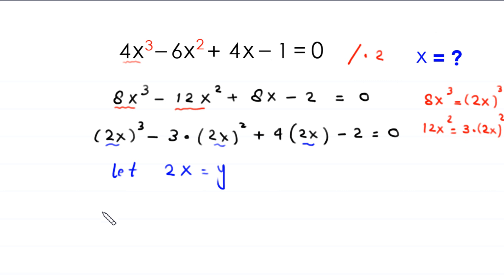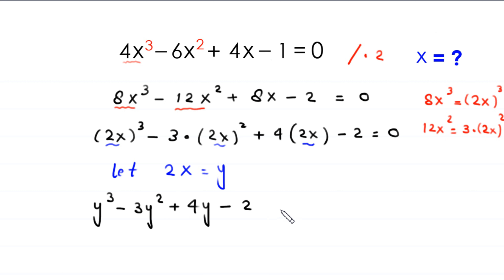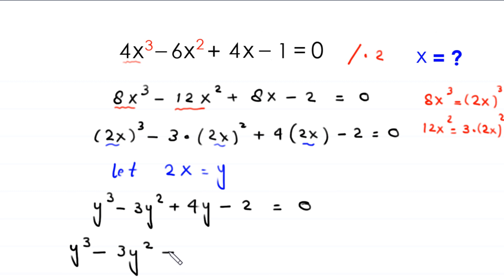Substituting y = 2x, the equation becomes y³ − 3y² + 4y − 2 = 0. Note that the constant −2 can be written as −1 − 1, which will help us group terms in the next step.